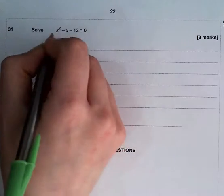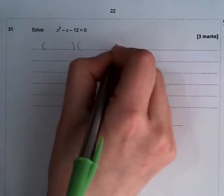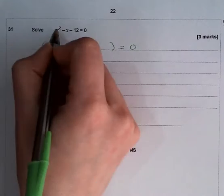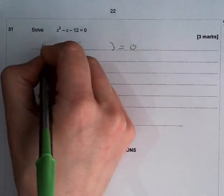To factorize, we are going to open two brackets. Don't forget the answer is always 0. Now when we do this, x² is always x multiplied by x, so we're going to start with that.